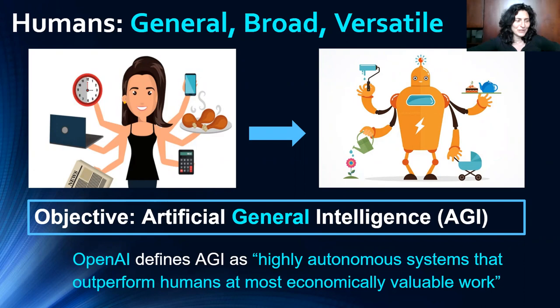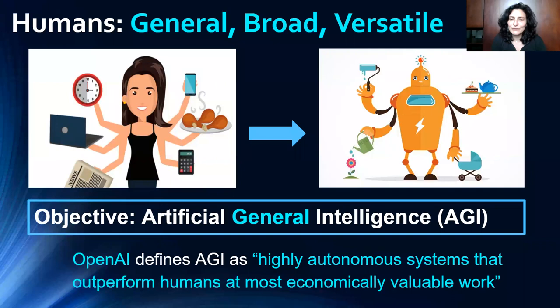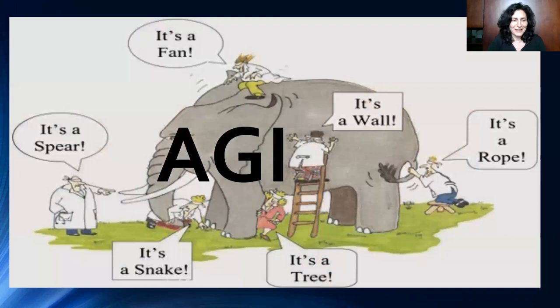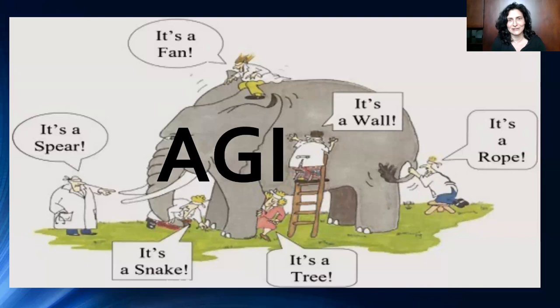Systems are becoming more and more versatile, and to me that's the holy grail of artificial intelligence — matching human ability to be so versatile, to learn all the different things humans do, and be extremely general and flexible at adapting to new situations and new skills. The term AGI — artificial general intelligence — is the topic of lots of debate recently within and around the field.